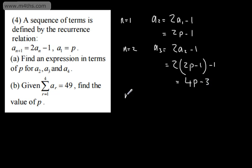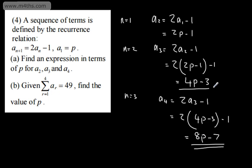If we now consider when n is equal to 3, that gives us a4. We're going to have 2 lots of a3 minus 1, which is going to be 2 lots of 4p minus 3 minus another one, which is going to give me now 8p minus 7. So that gives me my fourth term, that gives me my third term, that gives me my second term, and of course the first term is just p.